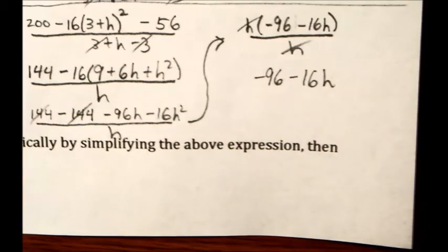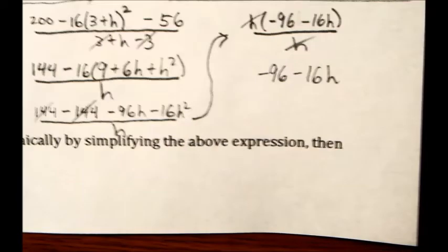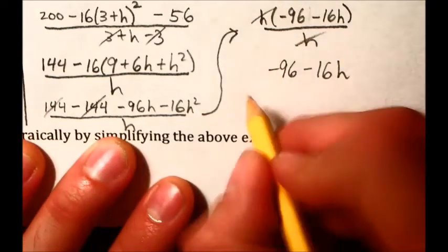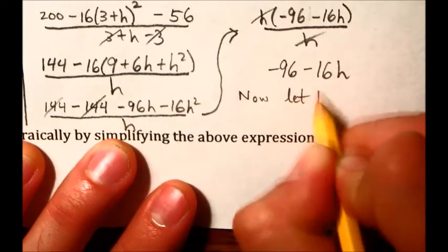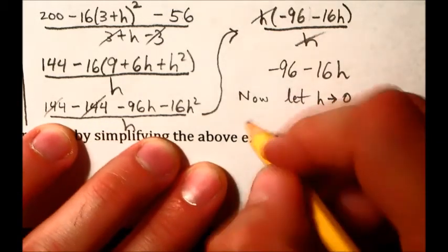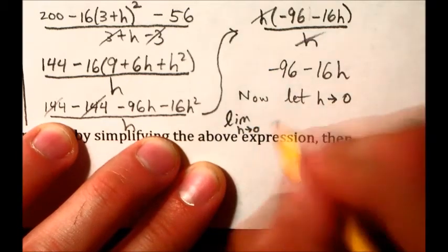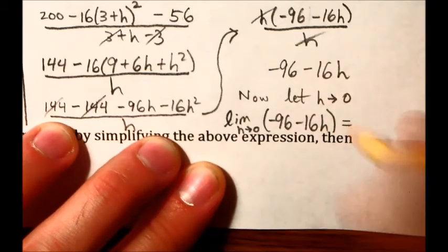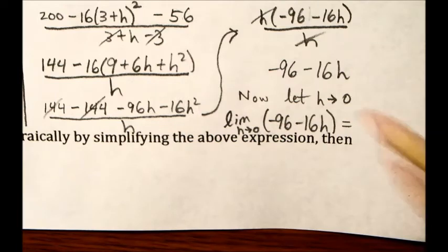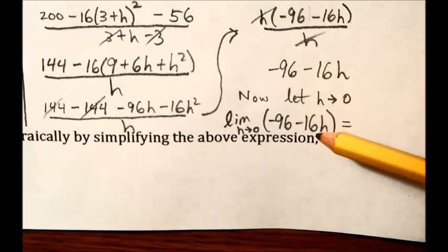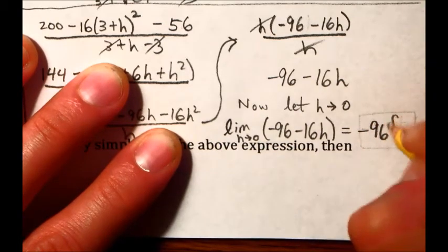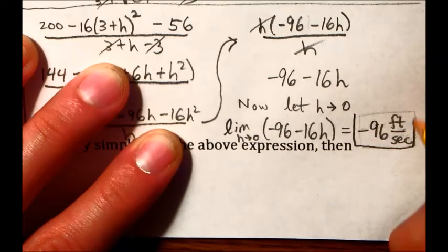Now remember what we had said earlier about desiring the h, which is the time delay, to be 0. That was like a dream. Well, here's our dream come true. We couldn't plug it in as 0 earlier, remember from over here? But now that we've simplified the difference quotient, we can plug in 0. Now, let h go to 0. So if you remember how we write this, we write this as lim with an h goes to 0 under it, and then negative 96 minus 16h. And if you're doing a limit, you can take your value here and substitute it in to see if it actually simplifies. And it comes out to negative 96 feet per second.